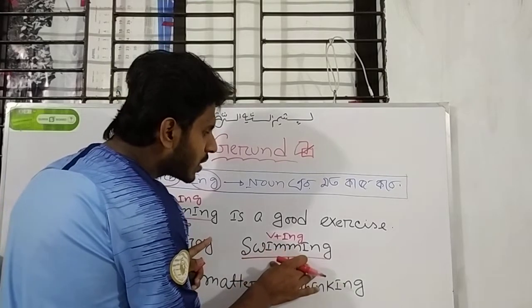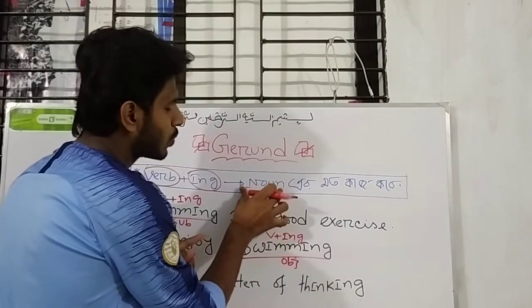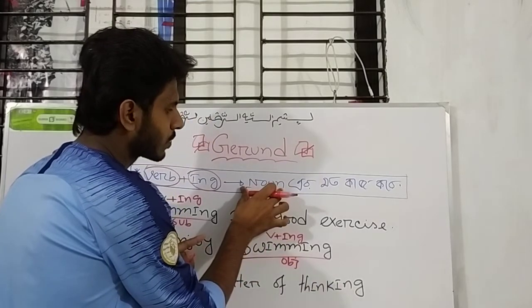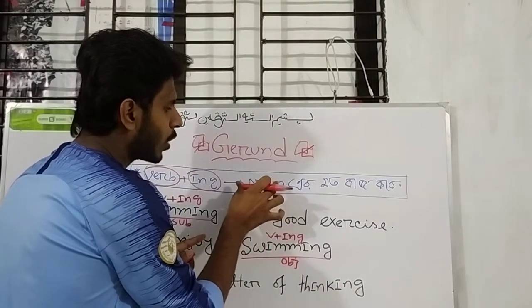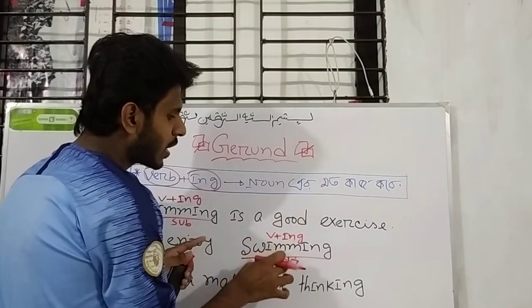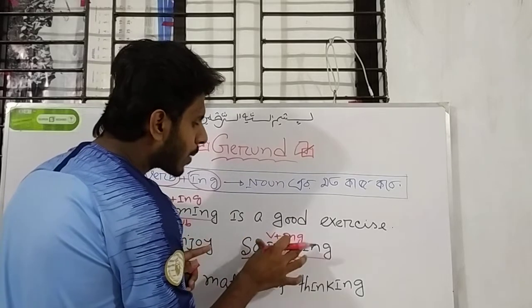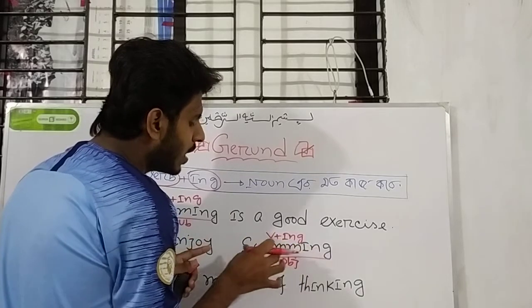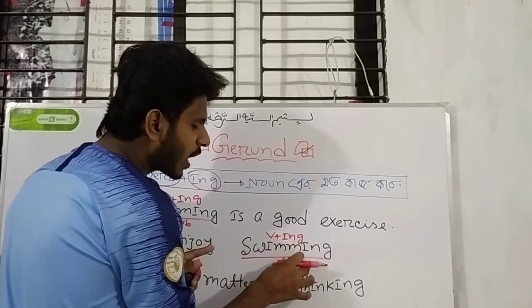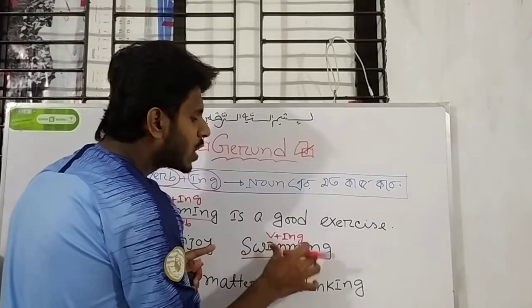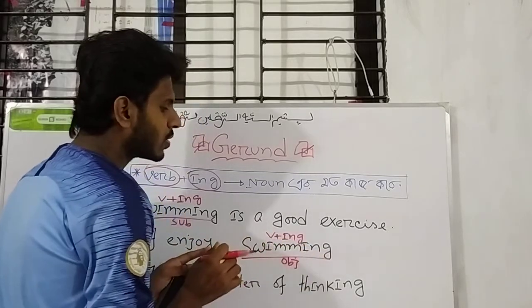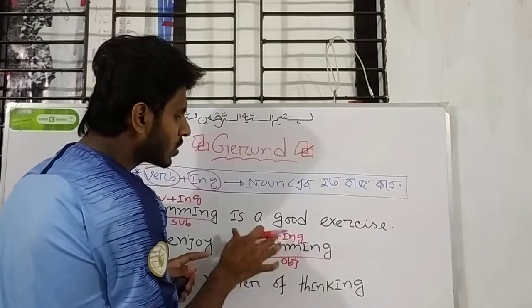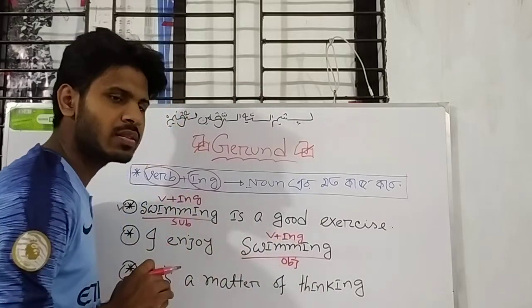Then, where is object? Object is called noun. So, this verb plus ing is called object. This verb plus ing is now known as a noun.